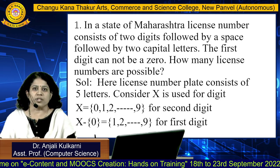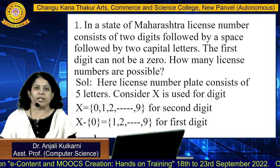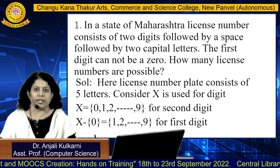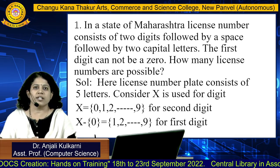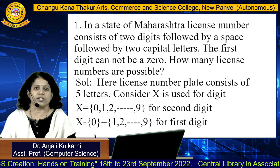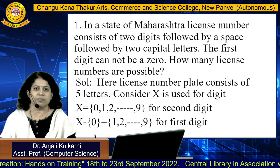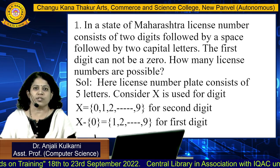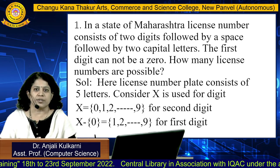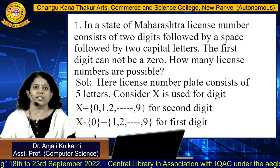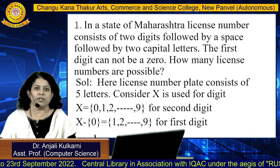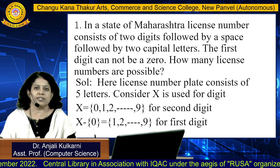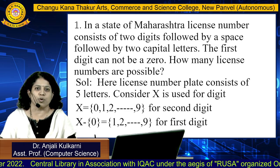Now based upon this, consider one example. Here we have to form the license number plate. The question is: in the state of Maharashtra, a license number consists of two digits followed by a space followed by two capital letters. The condition is the first digit cannot be zero. How many license numbers are possible?